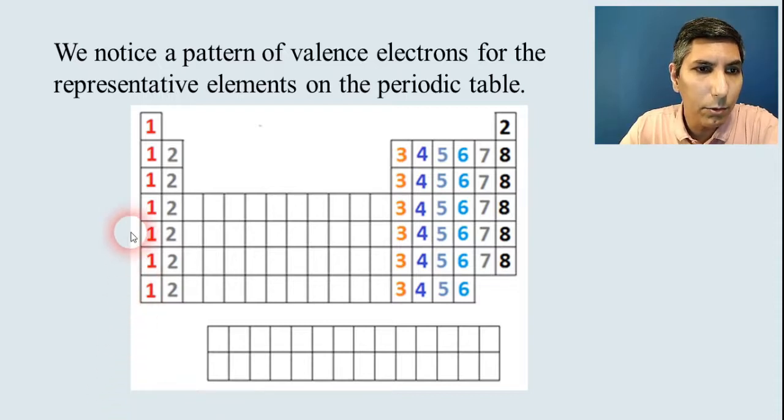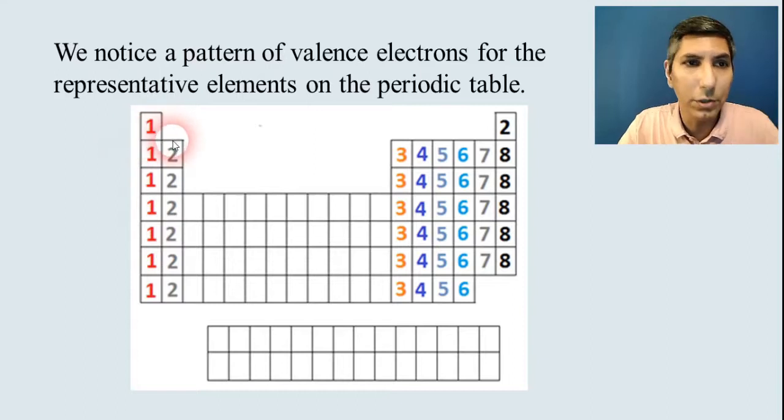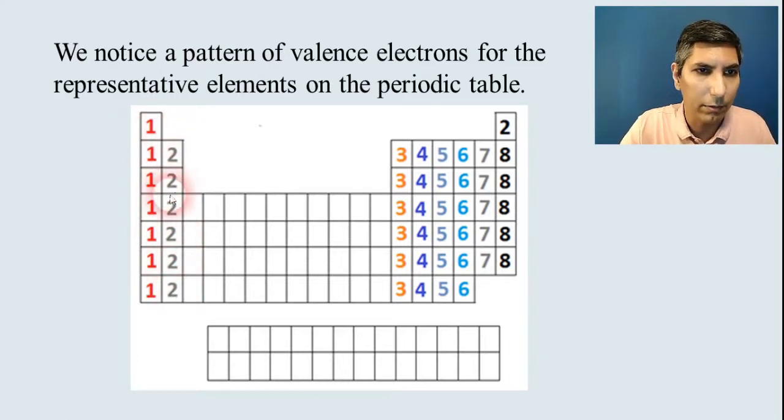If you've taken a first-year chemistry class, you've probably learned about some of these before. Our first pattern is the pattern of valence electrons for representative elements on the periodic table. If you took first-year chemistry, you might remember that all these elements in group 1 have one valence electron, and likewise in group 2, they all have two valence electrons. Group 13 they'll all have three valence electrons. Group 14, they have four, and it kind of goes on like that.